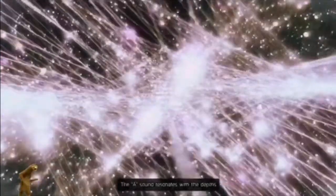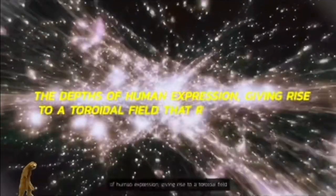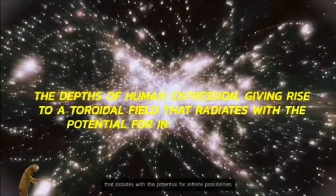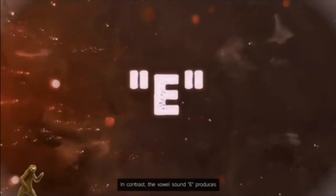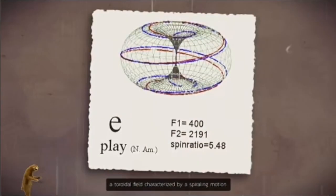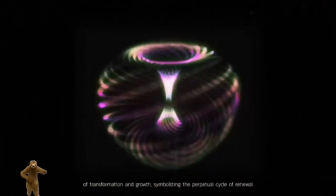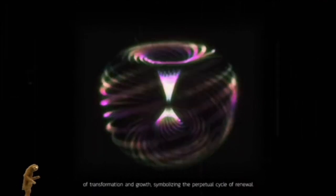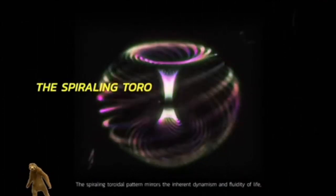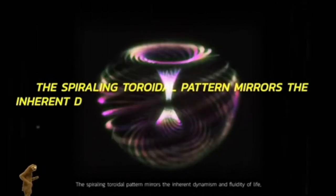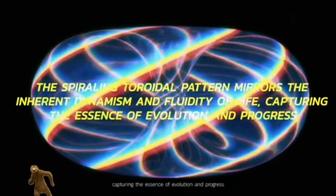The A sound resonates with the depths of human expression, giving rise to a toroidal field that radiates with the potential for infinite possibilities. In contrast, the vowel sound E produces a toroidal field characterized by a spiraling motion. This field evokes energies of transformation and growth, symbolizing the perpetual cycle of renewal. The spiraling toroidal pattern mirrors the inherent dynamism and fluidity of life, capturing the essence of evolution and progress.